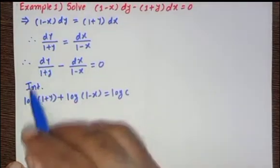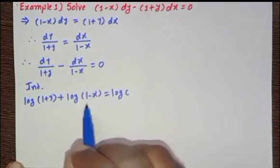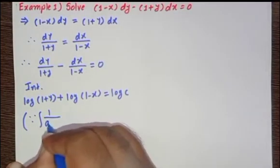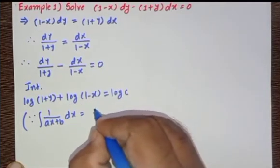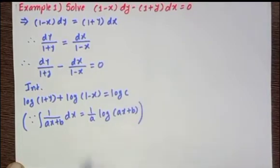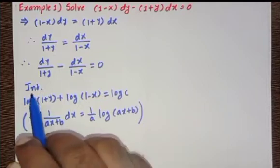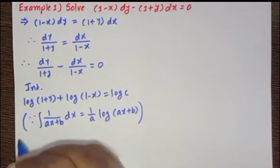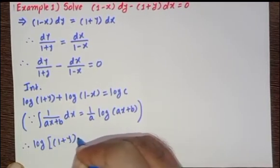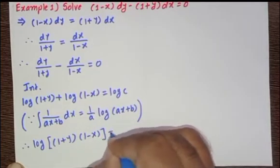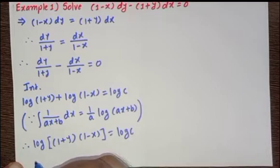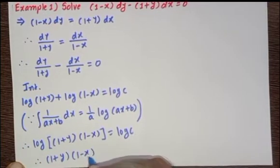Here, integration of 1/(1 - x) gives log(1 - x), using the formula: ∫1/(ax + b)dx = (1/a)log(ax + b). Using the rules of logarithm, this becomes log[(1 + y)(1 - x)] = log c. Taking antilog on both sides, we get (1 + y)(1 - x) = c.